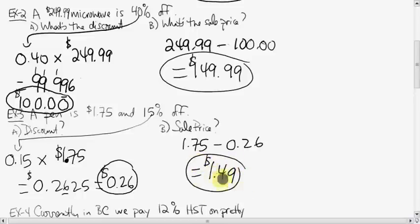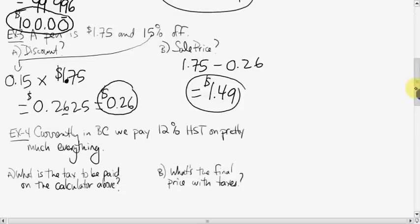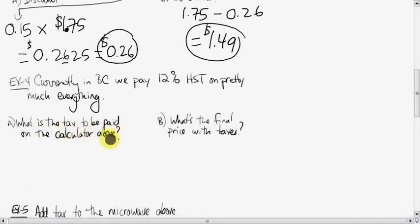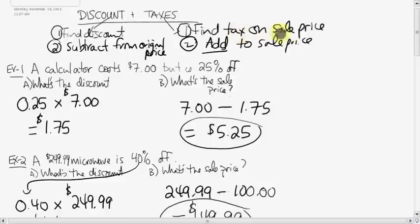That's the sale price we walked away with for the pen. But, all of these prices so far have been without tax. Currently in BC, we pay 12% HST on pretty much everything. It's changing soon. We'll just go with what we know right now. 12% tax on pretty much everything that you pay or buy. Anyway, so, this question here. What is the tax to be paid on the calculator above? The calculator that we had above. Let's take a look. The calculator original cost was $7. The sale price was $5.25. And remember what I said. They charge you tax on the sale price. So we're not going to go by the original price. We'll go by the sale price. So let's use this $5.25.